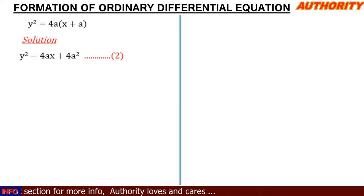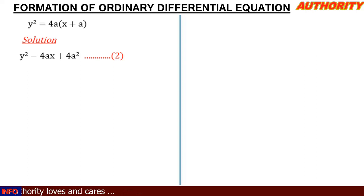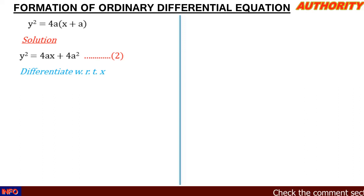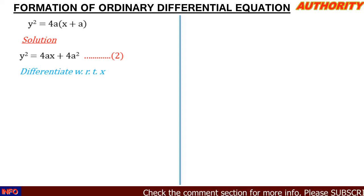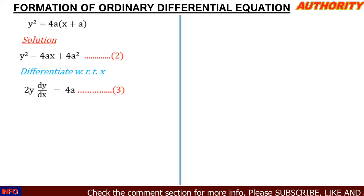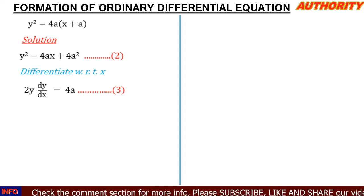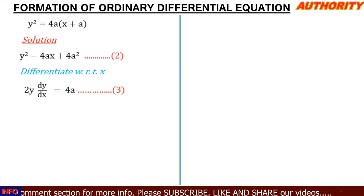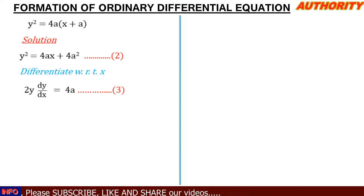For formation of an ODE by eliminating the arbitrary constant, we differentiate — because through differentiation, arbitrary constants disappear. When we differentiate the first time with respect to x, for y² we differentiate it as if it is x and then multiply by dy/dx. So we get 2y dy/dx = 4e^x, and the 4a² term, being constant, gives us 0.